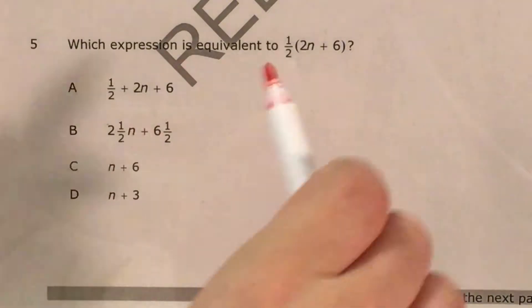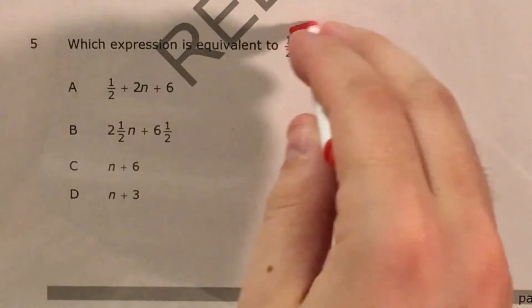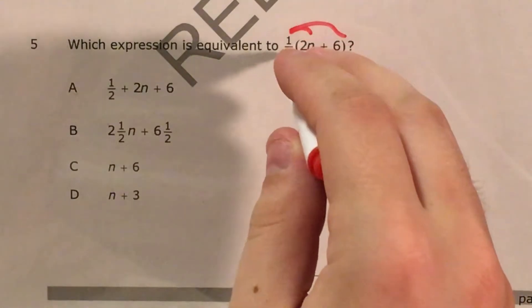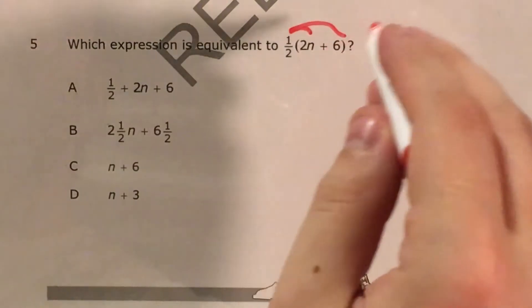the distributive property tells us that if I see some number multiplied outside parentheses by some stuff inside that's being added or subtracted, I have to actually multiply 1 half by the first thing and 1 half by the second thing. And the third thing,